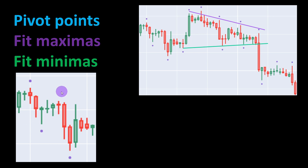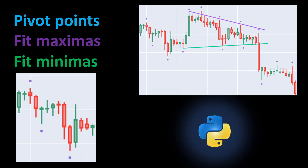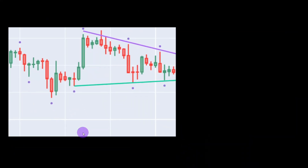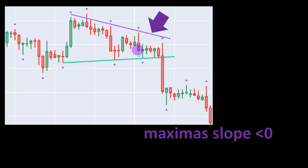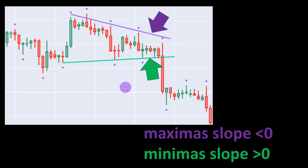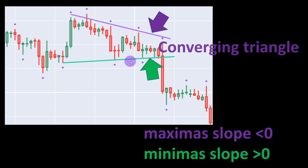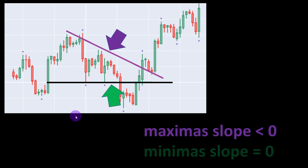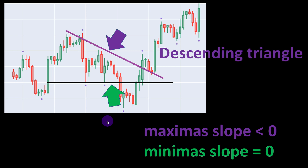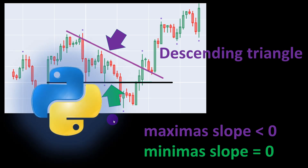For maximas, we compare the high values and look for a central candle whose high is higher than the considered neighbors before and after it. This can all be automated in Python, then we can look for particular triangle forms. For example, a converging triangle is detected when the maximal slope is negative and the minimal slope is positive. A descending triangle is detected when the maximal slope is negative and the minimal slope is very close to zero, or nearly horizontal.